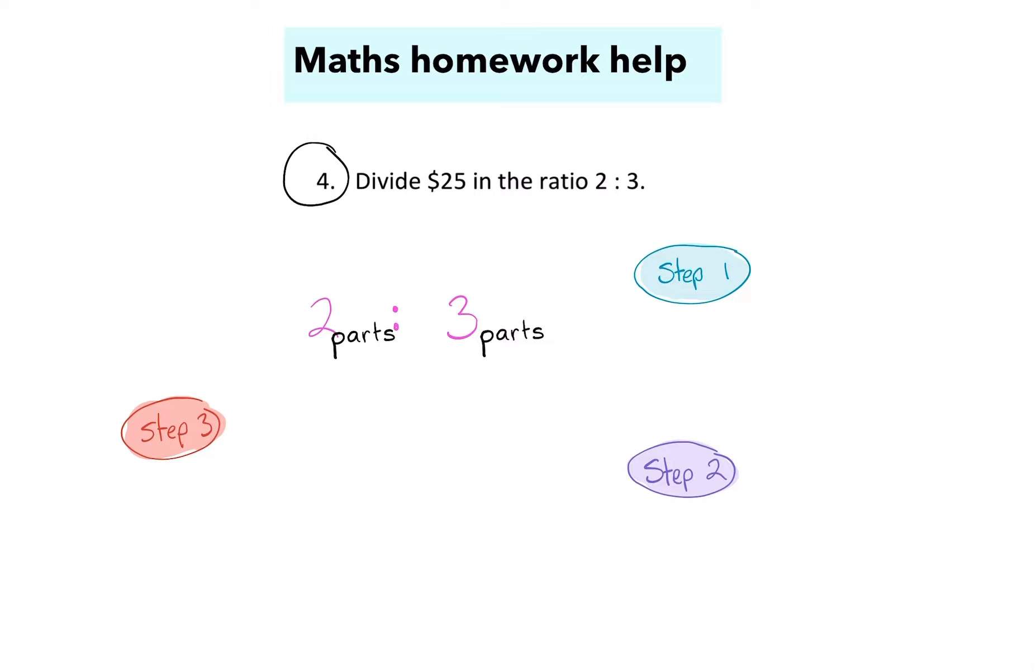This one's not difficult, but it does take a bit of writing, so be prepared for that. The question says divide $25 into the ratio 2:3, and I've basically taken this ratio and pulled it out. That's part of my setting out of my structure of my solution. I can imagine this as two parts to three parts. That's why I've written here in pink.